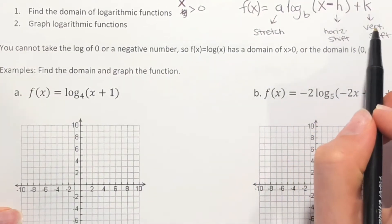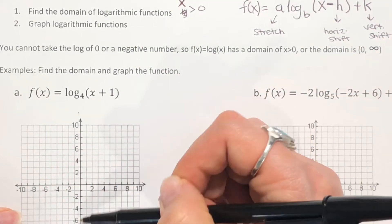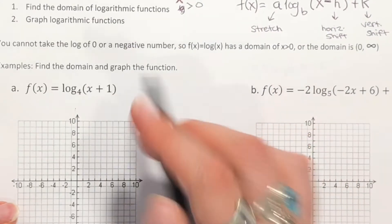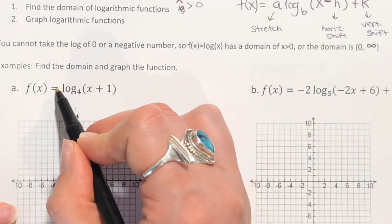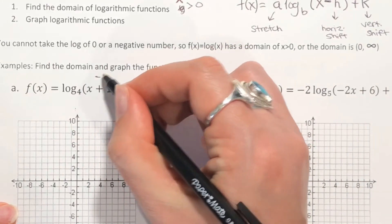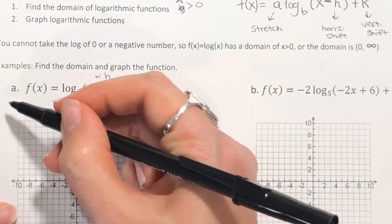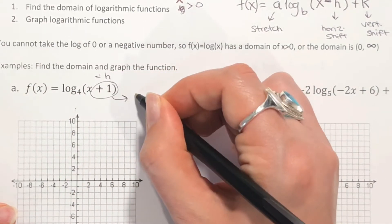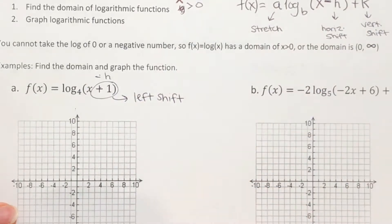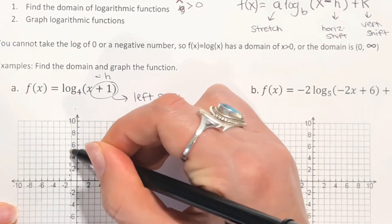Having these horizontal and vertical shifts will affect the domain. If I shift it to the left, instead of having my domain start at zero, it might shift over. So on this example, I don't have an a in front or a k, but I do have an h. It's a plus inside, which is actually going to go to the left — so this is going to be a left shift of one. Instead of having our asymptote right on the y-axis, we're shifting it left one.